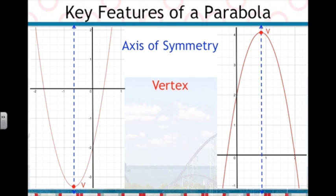We usually use the letter V to label it. If the parabola opens up and the vertex is the lowest point, we call it a minimum point, or min for short.